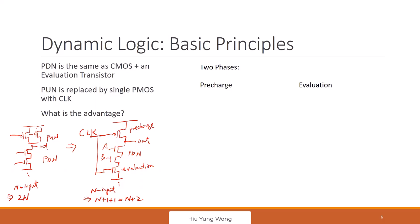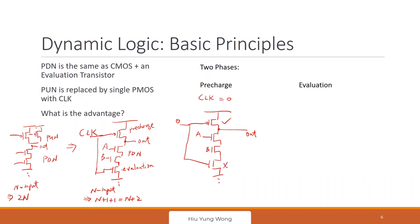Dynamic logic has two phases relying on the clock. During pre-charge, clock is zero. For a NAND gate example: clock equals zero, so the pre-charge PMOS is on and the evaluation transistor is off. What is the output?